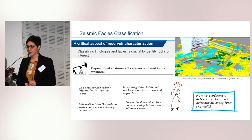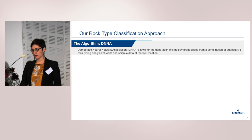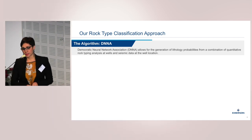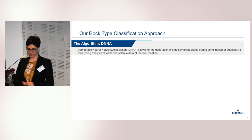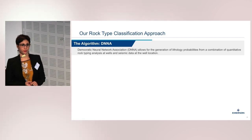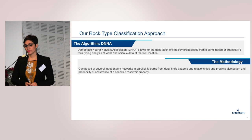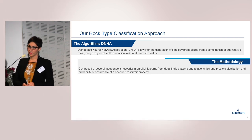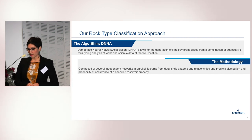Our rock-type classification approach is based on neural networks — an approach introduced in 2017, now a commercial package. Democratic Neural Network Association has proven to be efficient for predicting lithology from seismic data at the well location. You can use pre-stack or post-stack data; pre-stack is generally preferred because it tends to carry more information, and it can be combined with well data. This approach is composed of several independent networks in parallel, which allows better separation of the different facies classes, and you can combine this information.